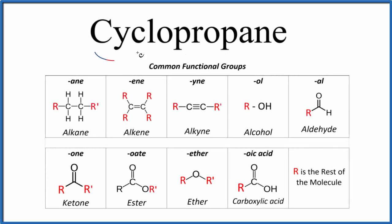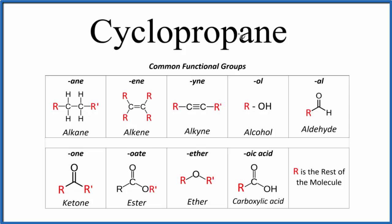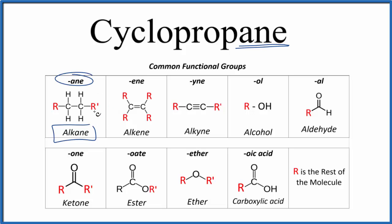Let's take a look at the structure for cyclopropane. We'll look at the structural formula and the molecular formula as well. Notice that we have '-ane' at the end. When you have '-ane', that means it's an alkane, so we're going to have all carbons and all hydrogens — only carbons and hydrogens — and they'll all be single bonded.